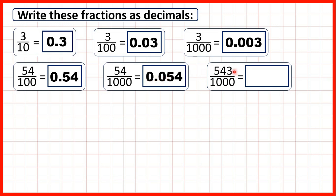Finally we have 543 thousandths. Again, the denominator of a thousand tells us that we can only have three digits after the decimal point. So that's 0.543. The four gets pushed over into the hundredths column and the five gets pushed over into the tenths column.